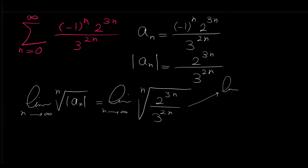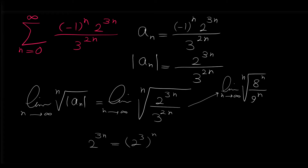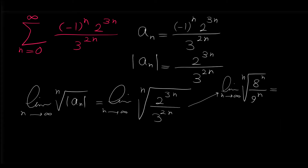For finding this limit, one method is to write it as the limit as n approaches infinity of the nth root of 8 to the n over 9 to the n. Note that 2 to the power of 3n is actually 2 to the 3, all to the n, and 2 to the 3 is 8, so we can write 2 to the 3n as 8 to the n. Similarly, 3 to the 2n is 3 squared all to the n, which equals 9 to the n. The powers cancel with the nth root, and the limit equals 8 over 9. Because 8 over 9 is less than 1, the given series is convergent.